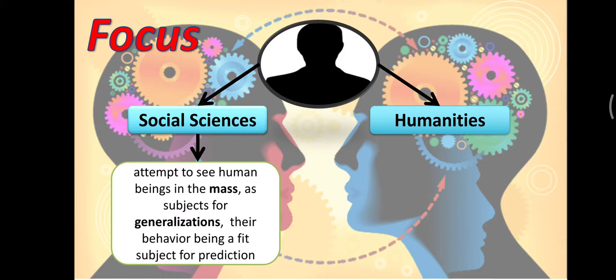In social sciences, it attempts to see human beings in a mass—meaning many people. It's a collective of persons sharing some cultures, traditions of the same society and community as subjects for generalizations. Their behavior being a fit subject for prediction. We see it in the macro perspective or macro level.